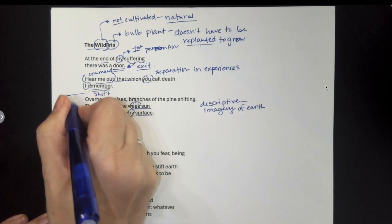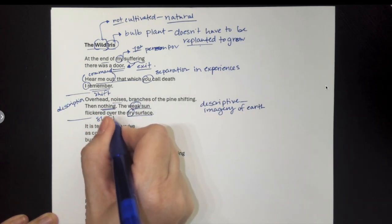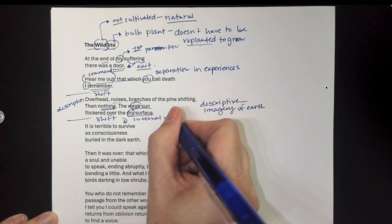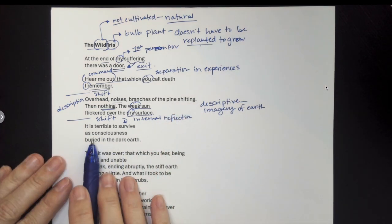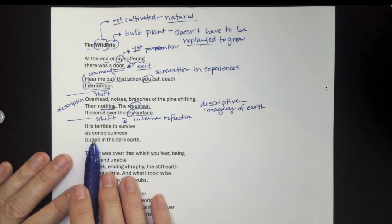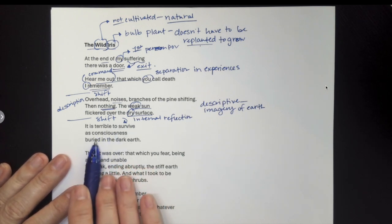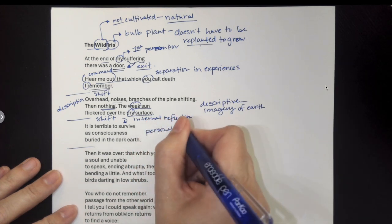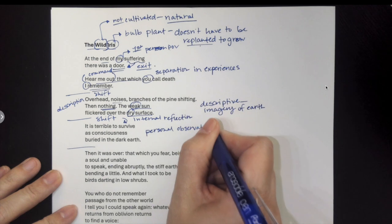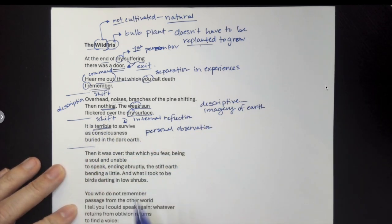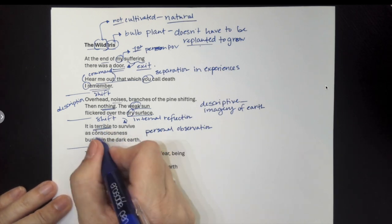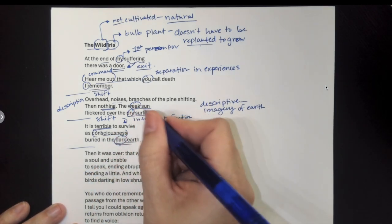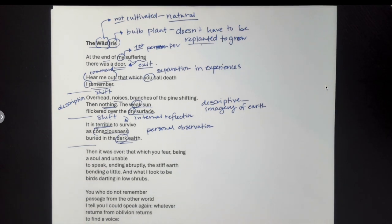So we have this description and then we shift back again to this kind of internal reflection. It's not dialogue. Nobody's speaking. But the shift to this internal reflection where the iris, our speaker tells us it is terrible to survive as consciousness buried in the dark earth. So here she's got this personal reflection or this personal observation about this kind of moment of death. Our iris does tell us it's terrible. It is terrible to survive that, but also reveals to us their idea of consciousness. And again, the earth is dark here, kind of like we've got the weak sun, the dry surface, the dark earth. All of those pairs kind of illustrate to us what's happening.